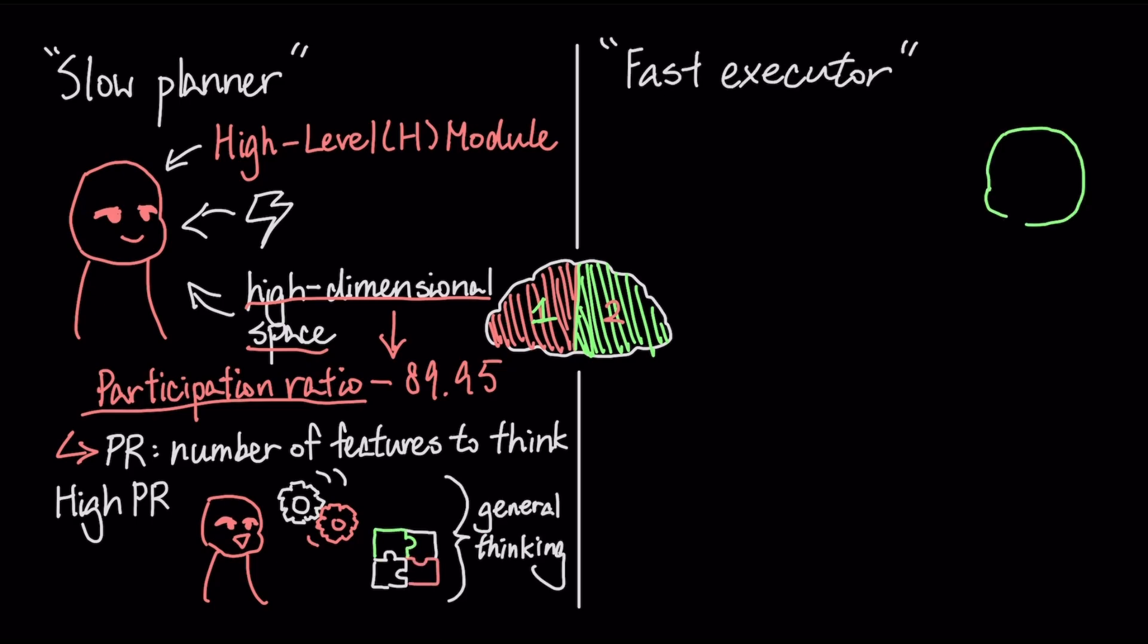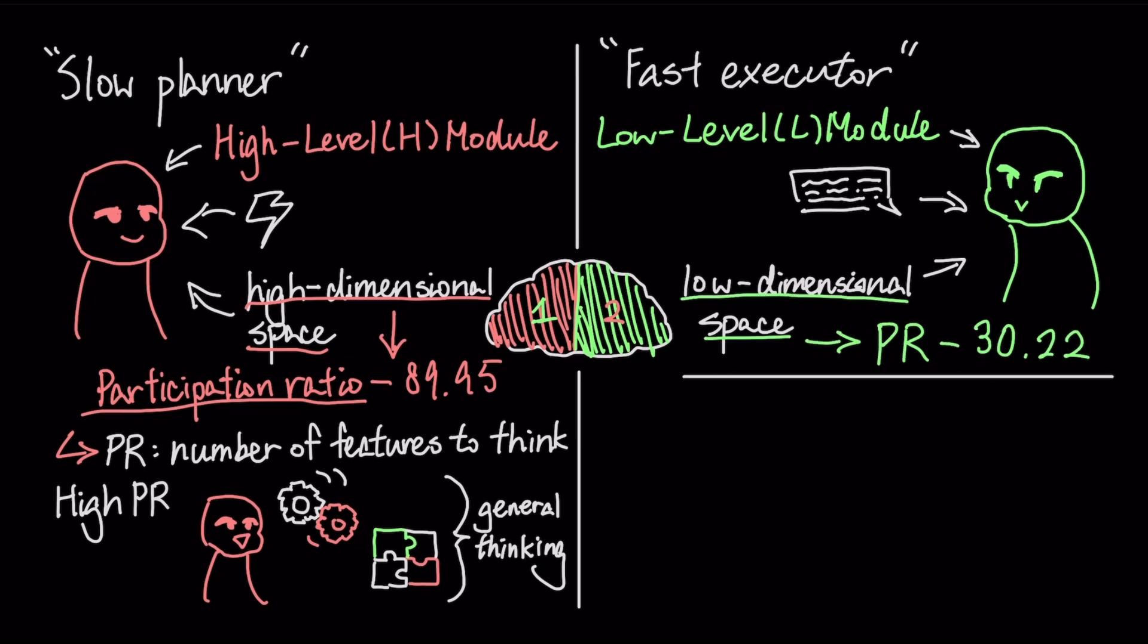The second is a fast executor, the low-level L module, which performs rapid, detailed computations within a specialized, low-dimensional space, PR of 30.22.